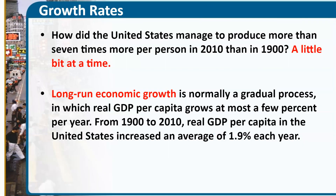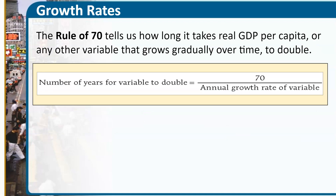Let's talk about this growth rate. How does the United States get to growth in real GDP per capita from 1900 to 2010? It doesn't just suddenly bloom and explode on the stage — it's a little bit at a time. It's a little bit of growth that happens over time, and that leads to long-run economic growth. 1.9% each year may not seem like a lot, but when you add it up over the decades — over 100 years — the growth rate is actually quite high and the impact is significant.